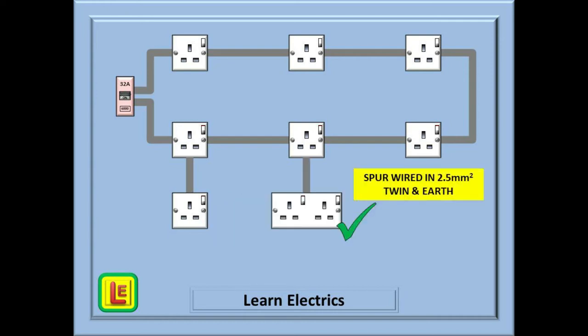We could add a second spur to a different socket. This time it is a double outlet and it is connected by a 2.5mm cable. This is still correct as it is assumed very unlikely that both sockets of a double outlet will each draw maximum current.